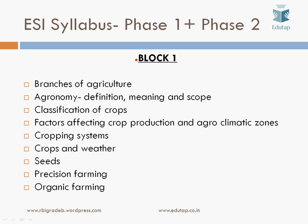Block 1 covers branches of agriculture and agronomy — including the definition, meaning and scope, classification of crops, factors affecting crop production, the various agro-climatic zones in India, cropping systems, crops and weather, seeds, precision farming, and organic farming.